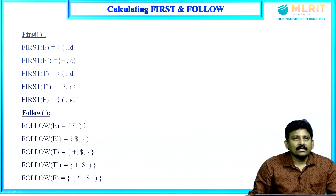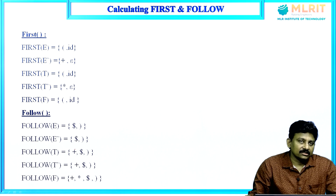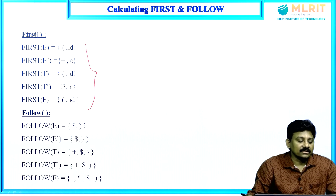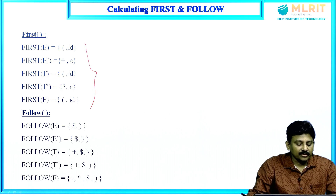Second step: calculating first and follow for the given grammar rules. First(E) = {(, id}, First(E') = {+, ε}, First(T) = {(, id}, First(T') = {*, ε}, First(F) = {(, id}. Follow(E) = {$, )}, Follow(E') = {$, )}, Follow(T) = {+, $}, Follow(T') = {+, $, )}, Follow(F) = {+, *, $, )}.